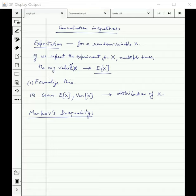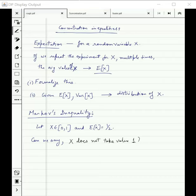So suppose I am given a random variable which lies between 0 and 1, and you are given that the expected value of X is equal to 1/2. So can we say that X does not take value 1? So the expected value of X is 1/2. Can we say with certainty that X does not take value 1?